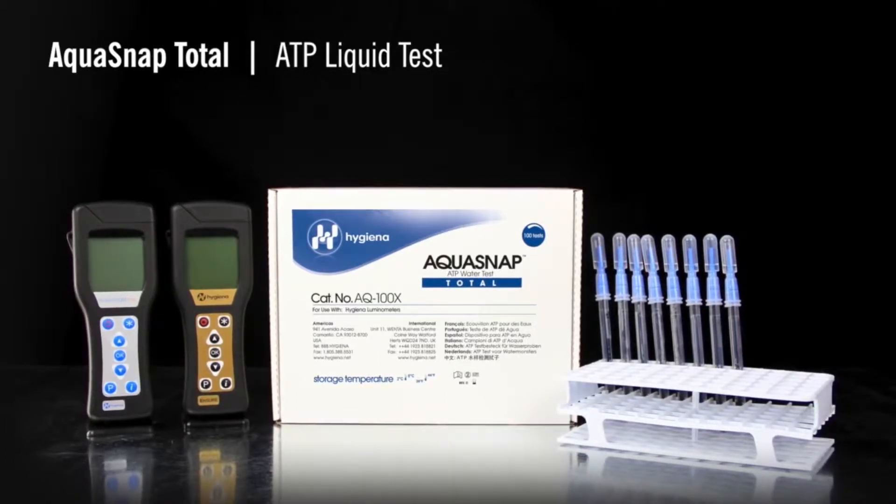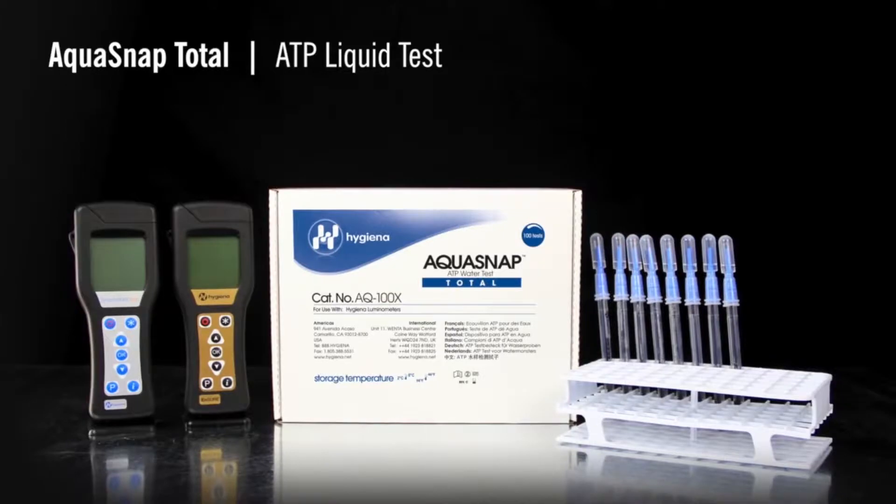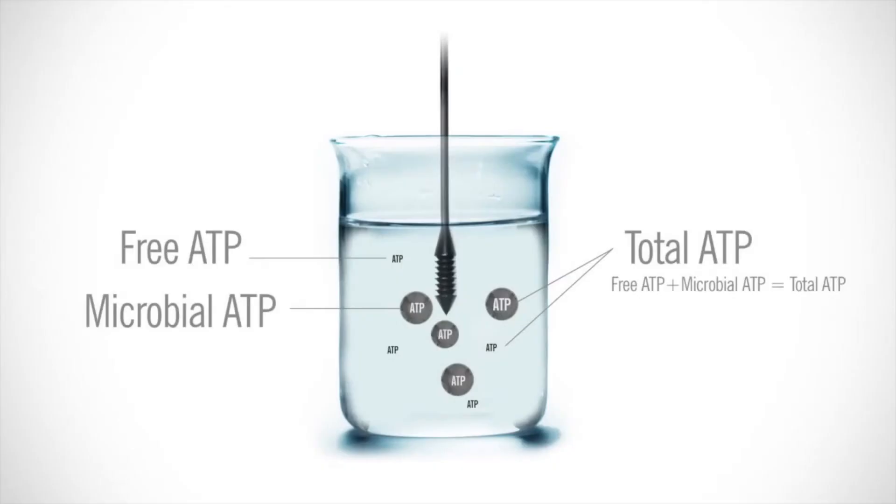The test device is available in two different variations, free and total. AquaSnap free measures dissolved ATP that is free-floating in solution. AquaSnap total measures both free ATP in solution and microbial ATP.